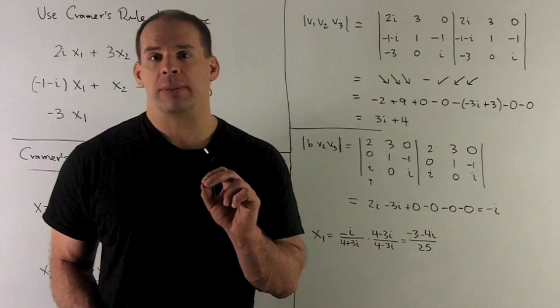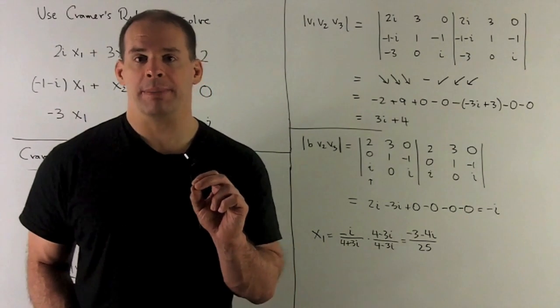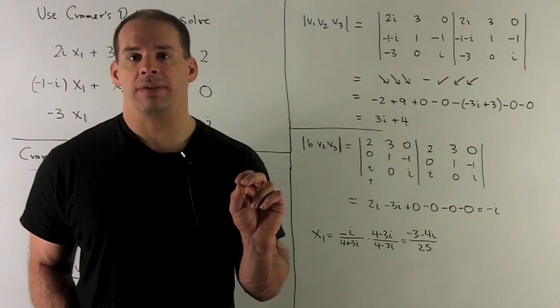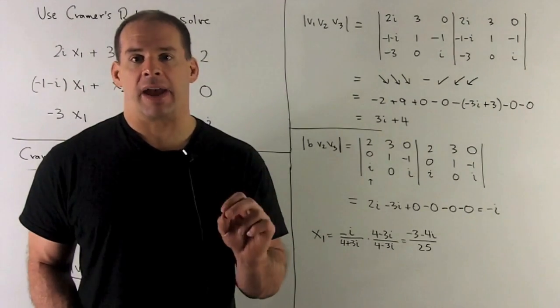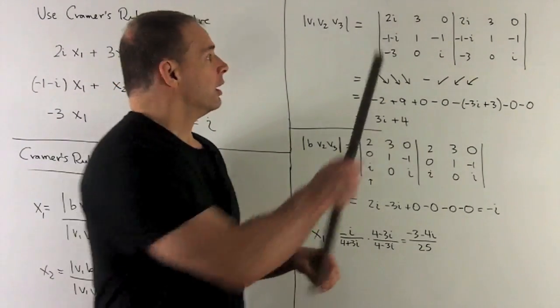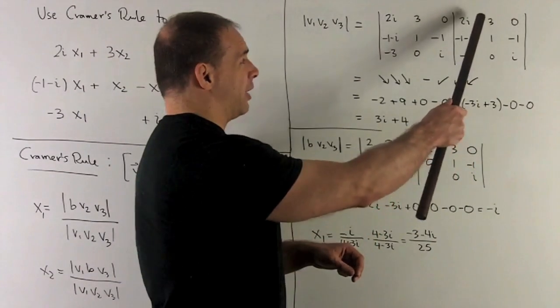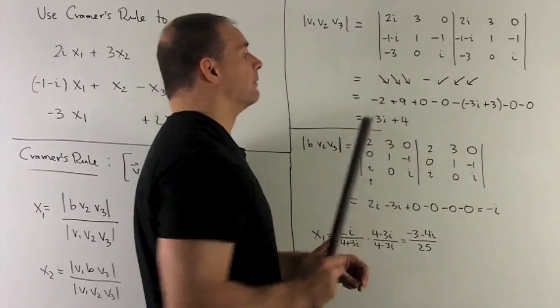We have a three by three matrix, but when I take its determinant, I just take the matrix, write it right next to itself, and then we're just going to go down the diagonals. I'll go down these three diagonals with a plus sign, down these three diagonals with a minus sign.